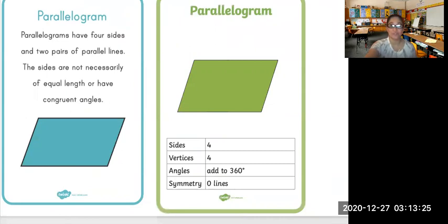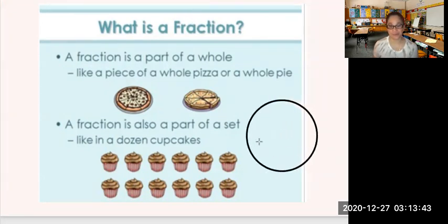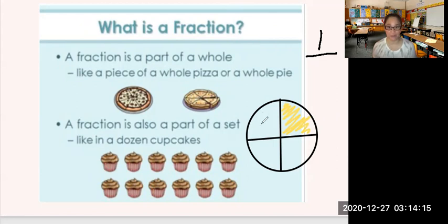So these are examples of 2D shapes. Now, what is a fraction? A fraction is a part of a whole, like a piece of a whole pizza or a whole pie. Let's say we have the 2D shaped circle here, and we try to divide that circle into four parts. I shaded one part of that circle, so I write the number 1 on top. The number at the bottom — I count how many total pieces I have all in all: one, two, three, four. I have four parts all in all, so the fraction for this circle, which I shaded yellow, is one-fourth.